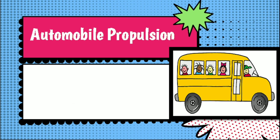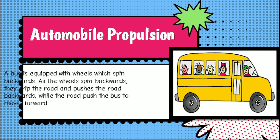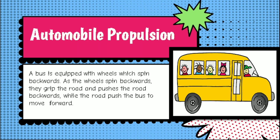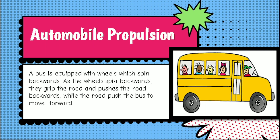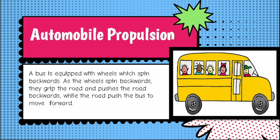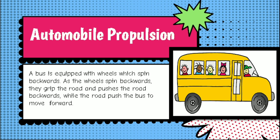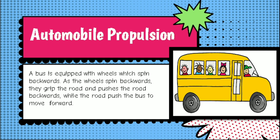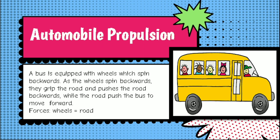Automobile propulsion: consider the motion of a bus on the way to school. A bus is equipped with wheels which spin backwards. As the wheels spin backwards, they grip the road and push the road backwards, while the road pushes the bus to move forward. The forces of the wheels and the road are equal but in opposite directions.